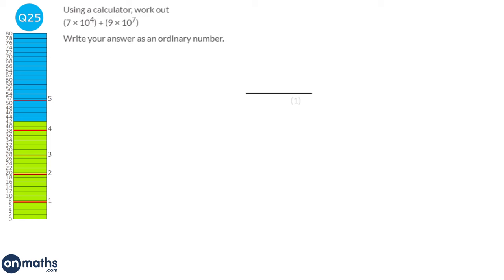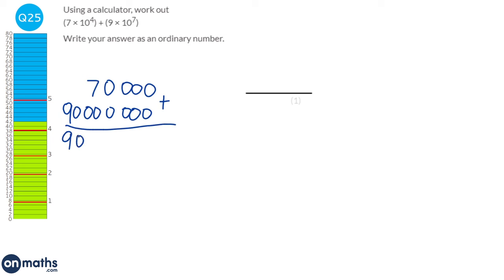7 times 10 to the power of 4 is 70,000. 9 times 10 to the power of 7 is 90,000,000. When you add them together, you get 90,070,000. If you have access to a calculator on the calculator paper, you can type it in directly. There isn't a shortcut like adding the 7 and 9 — you just have to work out each number and add them together.